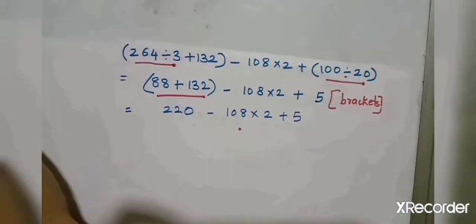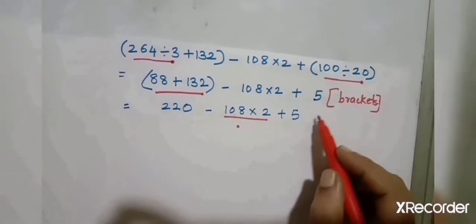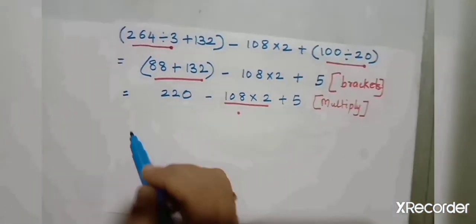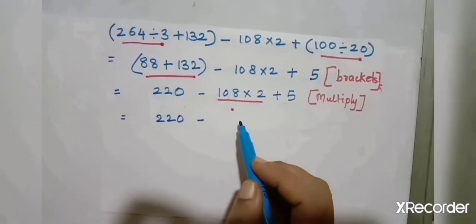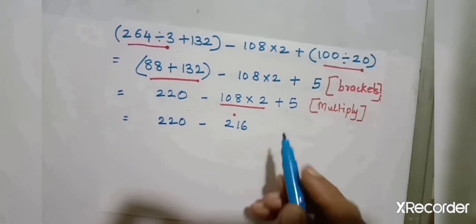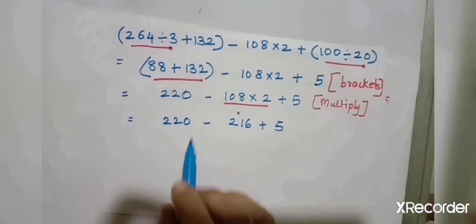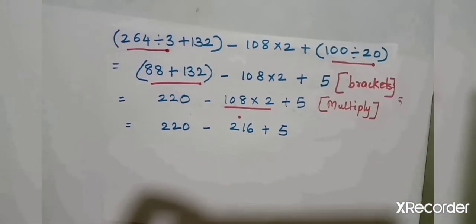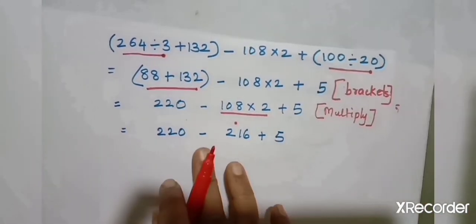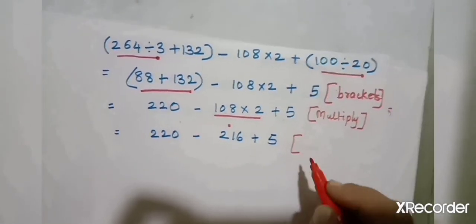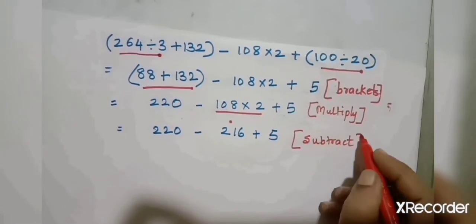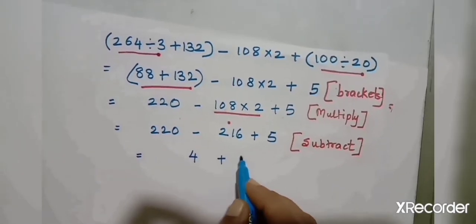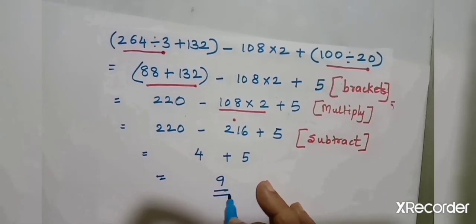Now according to the BODMAS rule we do multiplication first: 108 into 2 gives 216. So we have 220 minus 216 plus 5. Now here we have two operations — subtraction and addition. According to BODMAS, addition comes first, but when we go from left to right, subtraction comes first. So we do 220 minus 216 which gives 4, plus 5. The final answer is 4 plus 5 equals 9.